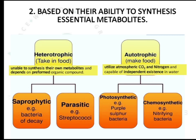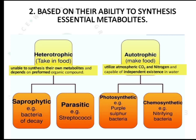Heterotrophic organisms are again classified into saprophytic and parasitic. Saprophytes are organisms which use decaying material for their food — examples are bacteria of decaying matter. Parasites use organic material produced from a host cell, acting as a parasite on a host. An example is Streptococcus.